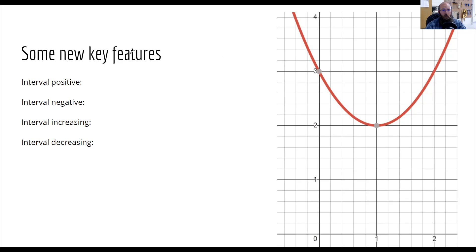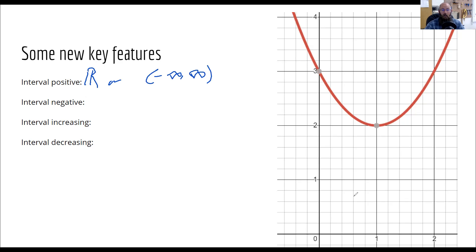We're going to continue to look at some key features. The interval that is positive — we're really just looking at where the graph is above the x-axis. Well, it's actually this entire graph because the whole thing is above my x-axis. So I could put here all real numbers, or I could write this is from negative infinity to infinity. My interval that's negative — well, again, there's nothing here. It's all above my x-axis, so it's all positive. So there are none. Write none down there so I know as a teacher that you didn't just leave it blank.